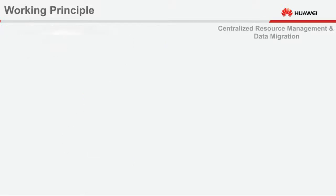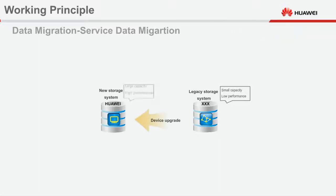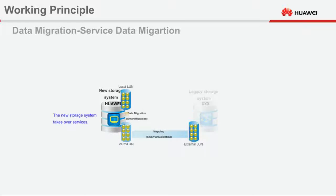Data Migration: Data is migrated in the following scenarios. Scenario 1: The capacity and performance of a legacy storage system cannot meet service requirements, so data must be migrated to a new storage system with larger capacity and higher performance. Smart Virtualization maps LUNs on the legacy storage system to the new storage system as E-Dev LUNs, then interworks with Smart Migration to reliably migrate service data from the legacy storage system to the new storage system. After all data is migrated, the new storage system takes over services from the legacy storage system.